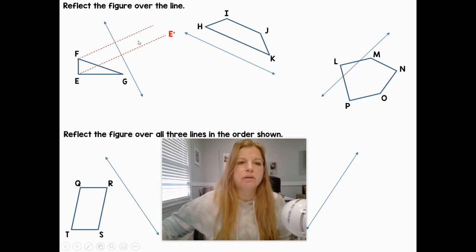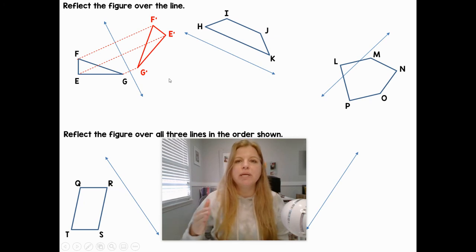Same thing with F. I'm going to construct a perpendicular line. This distance is then copied onto the other side to get F prime. Same with G prime, which ends up being really short. I'm going to connect my E prime, F prime, and G prime.